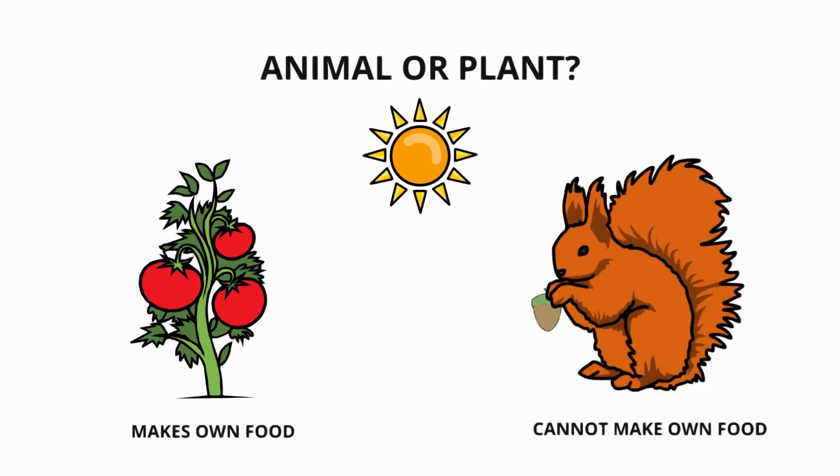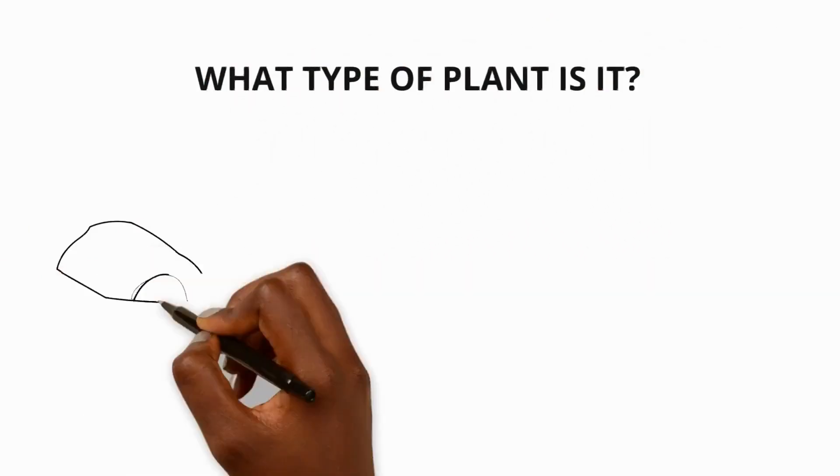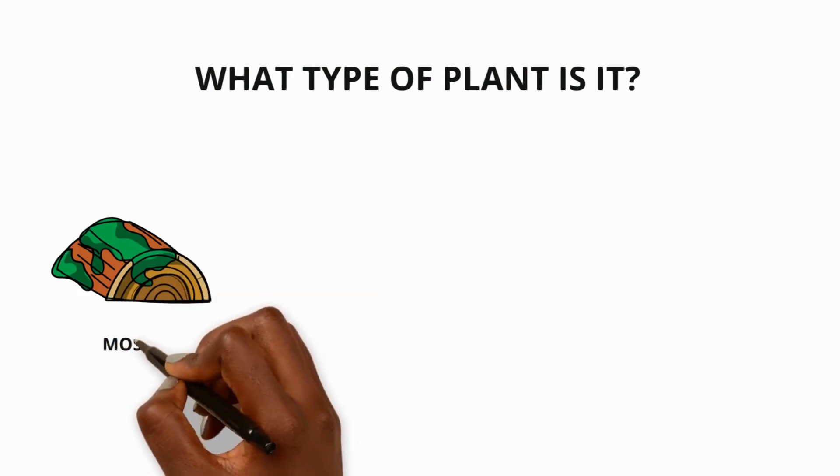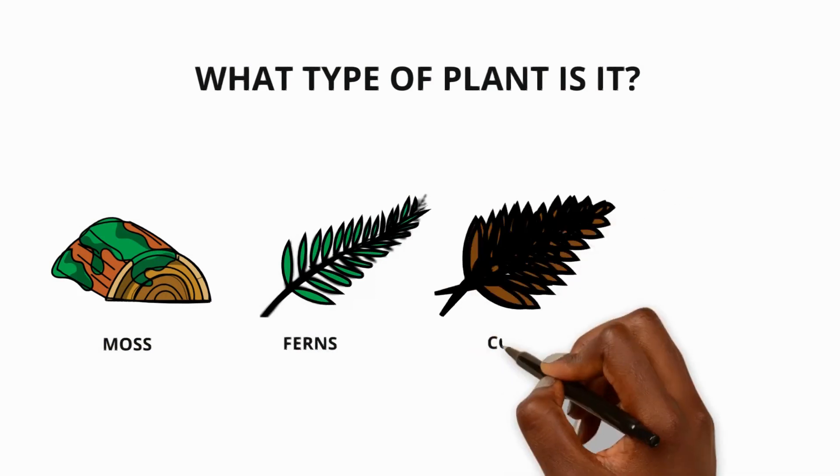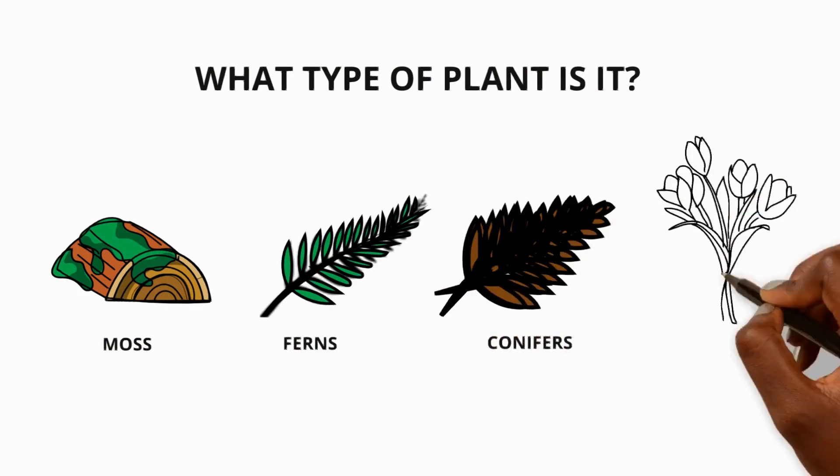And once we know it's a plant we can ask more questions to find out what type of plant it is. For example mosses have no roots, ferns have divided leaves called fronds and conifers have seeds that grow inside cone-shaped structures.